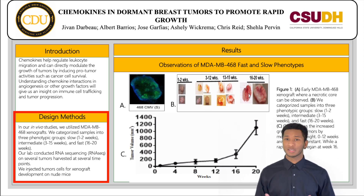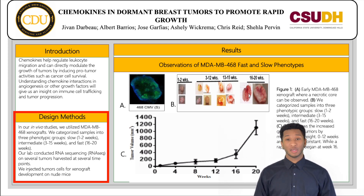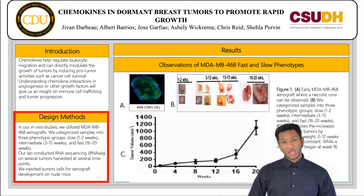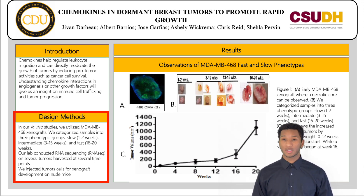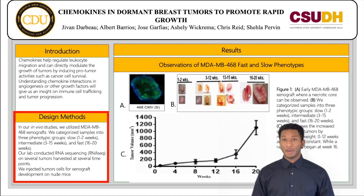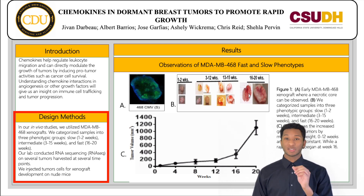Regarding the design and methods: in our in vivo study, we utilized African-American triple negative NDAMB 468 xenografts. We then categorized samples into three phenotypic groups — our slow group, which is one to two weeks; our intermediate group, three to 15 weeks; and our fast-growing tumors, which is 16 to 20 weeks. Based on these groups, we conducted RNA sequencing on several tumors at several time points, and we also injected tumor cells of xenografts development in nude mice.